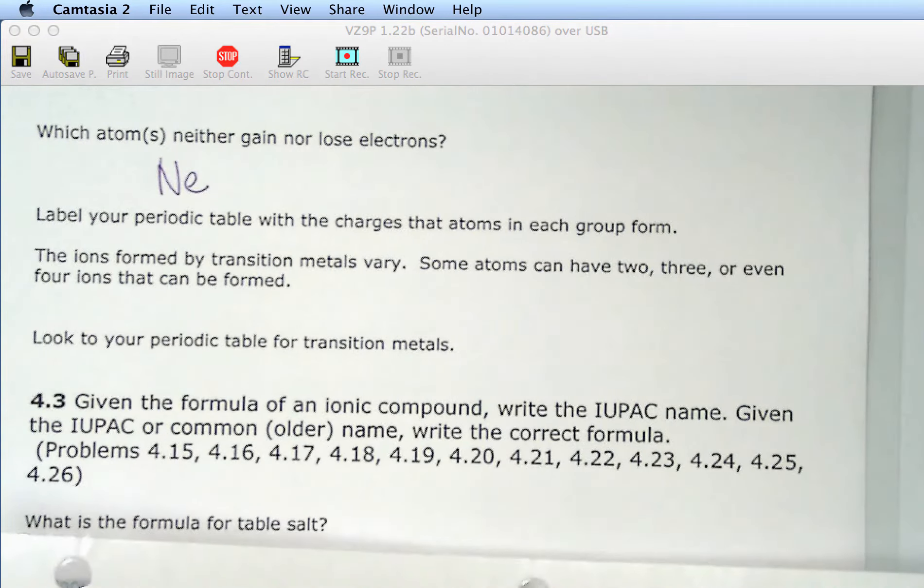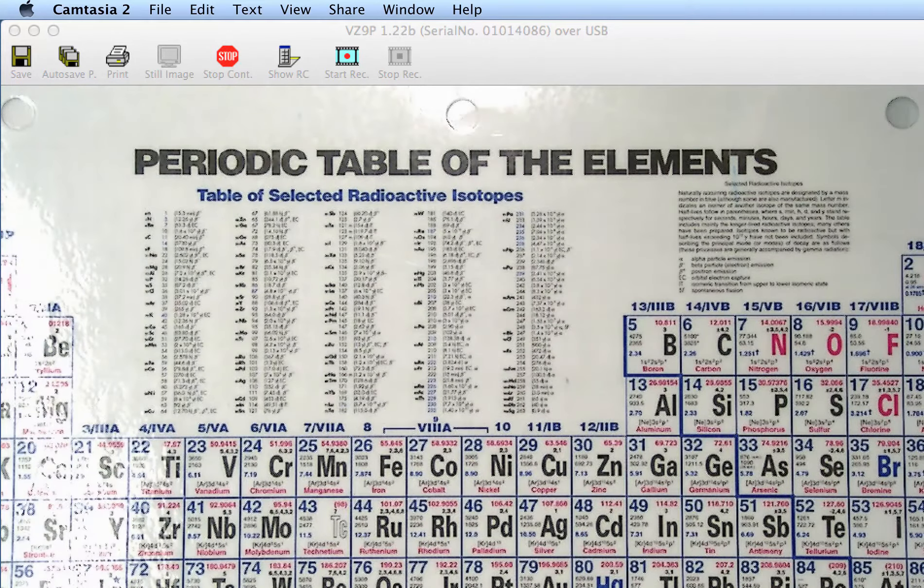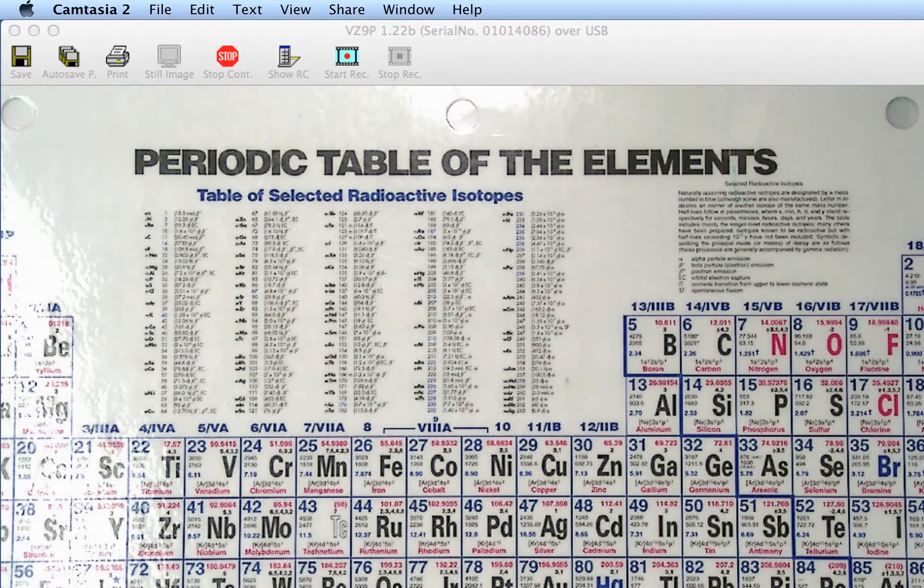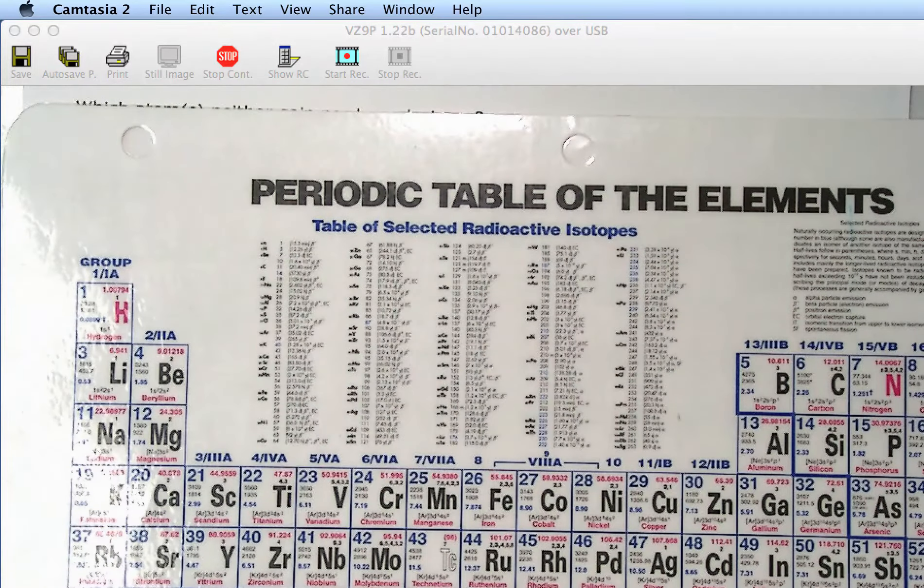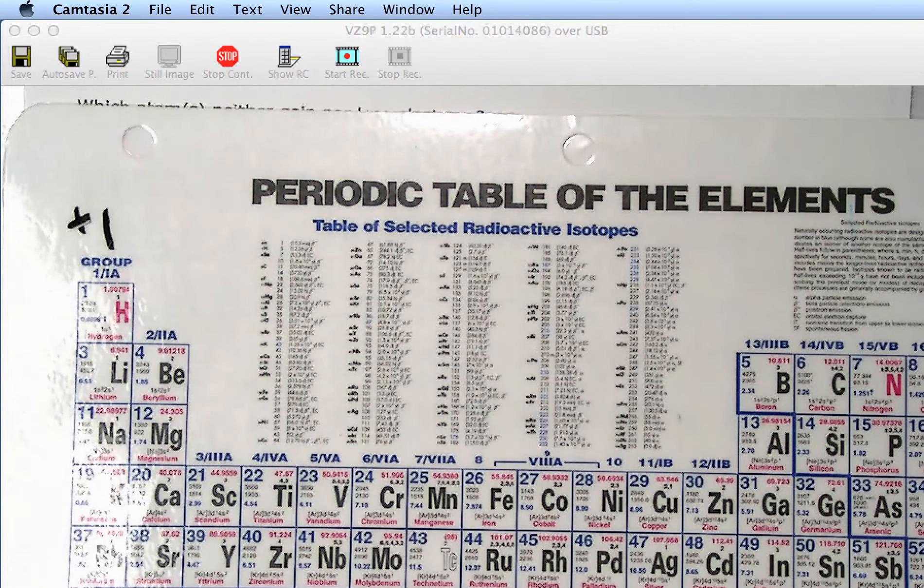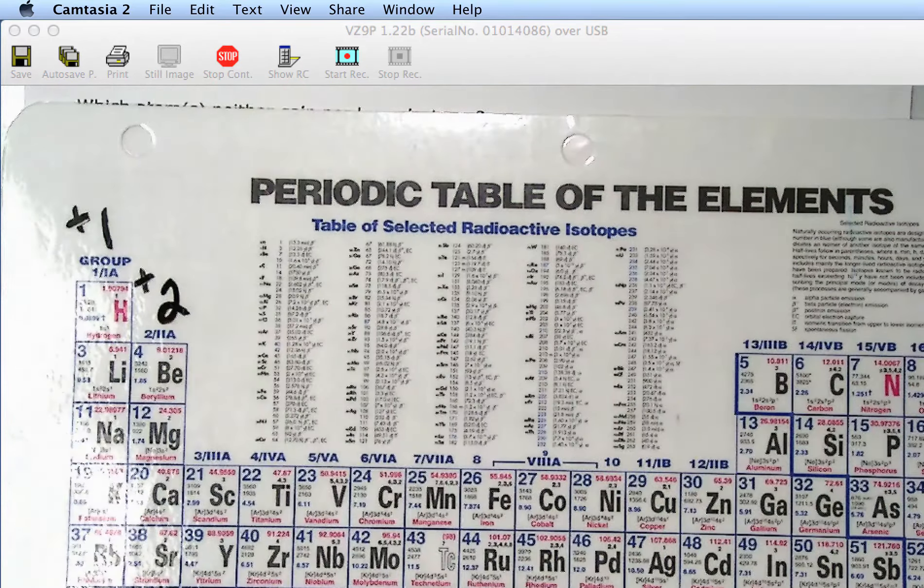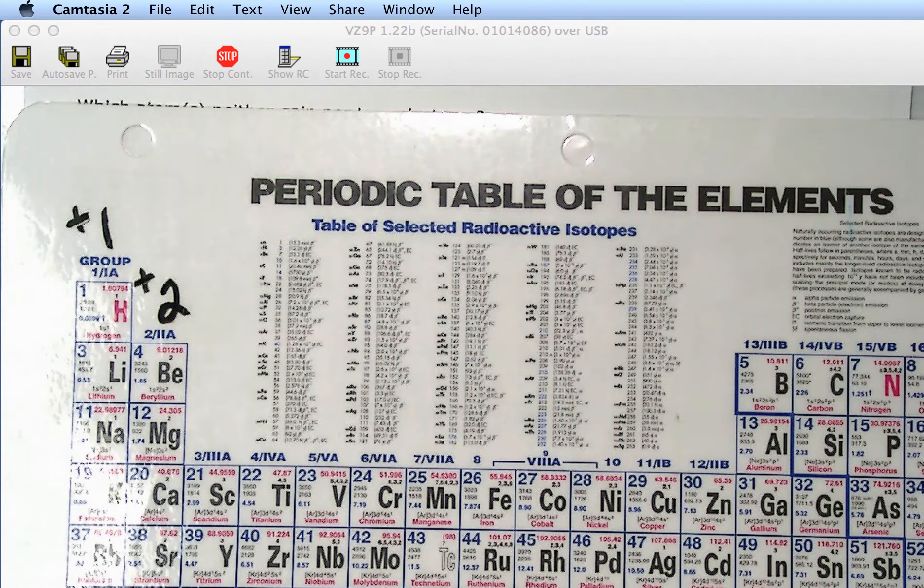So, on your periodic table, you have to label your periodic table with charges that atoms in this group are on. So, group one, remember sodium was in group one. And it formed a plus one. So, group one is going to be plus one. Group two is going to be plus two. Now, transition metals vary. It could be a plus two. It could be a plus four. It depends on the metal. So, I'll zoom in on one.